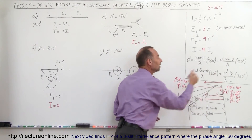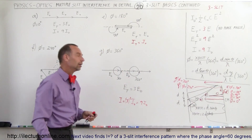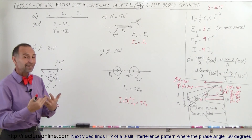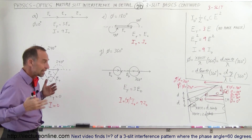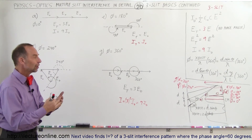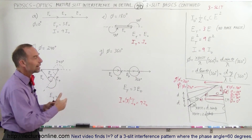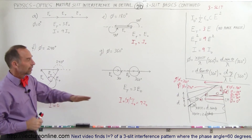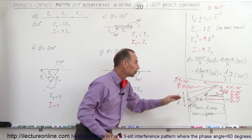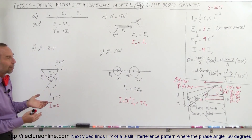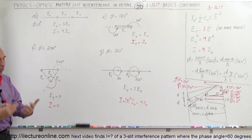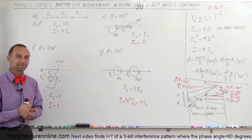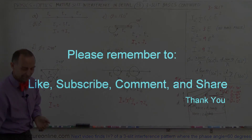That's how the pattern continues. Hopefully this gives you a better understanding of what happens with three slits — what happens to the electric field strength and the intensity of electromagnetic radiation at various locations, simply by vectorially adding the phasors going through each slit. This is a three-slit example, but we'll cover multiple-slit examples as well in future videos.